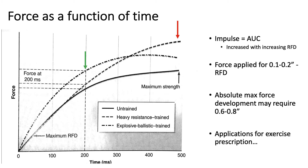Now let's explore force as a function of time using the force-time curve, with force on the y-axis and time in milliseconds on the x-axis. Here we have an untrained example, a heavy resistance-trained example, and an explosive ballistic-trained or power-trained example. Firstly, observe that maximum force is greatest in heavy resistance-trained individuals, attained at approximately 0.6 to 0.8 seconds. Second, the maximal rate of force development and impulse is greatest in explosive ballistic-trained individuals, reaching the highest rate of force development within 0.2 seconds — achieved through power-based training.